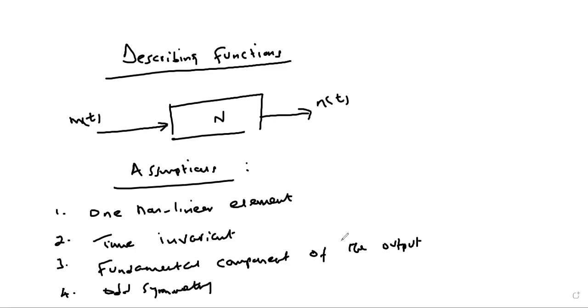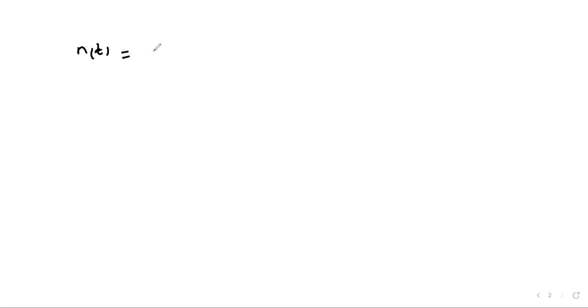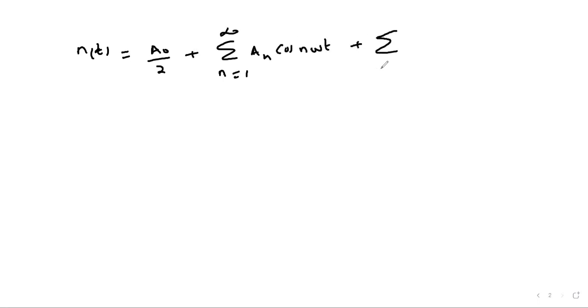For odd symmetry — symmetry about the origin — when you expand the function in a Fourier series, the constant term a₀ is always equal to zero. With those assumptions, we write our output n(t) as a periodic function expanded in Fourier series: a₀/2 plus the summation from n=1 to infinity of aₙ cos(nωt) plus the summation from n=1 to infinity of bₙ sin(nωt).